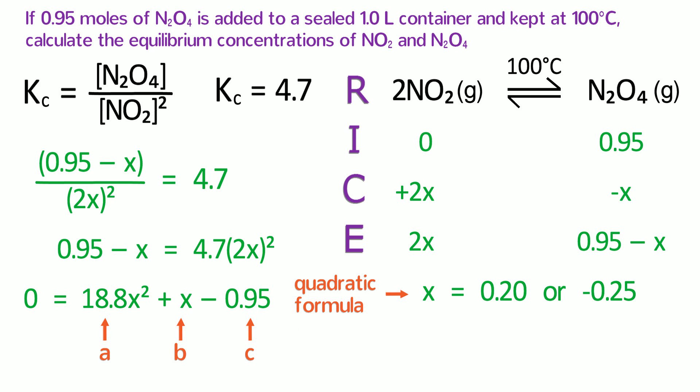Now, pause here and think about those two values. Which is the correct value for X? The negative value does not physically make sense because that would mean a negative concentration of NO2 at equilibrium, which of course is impossible. So, X equals 0.2.